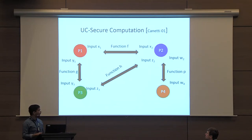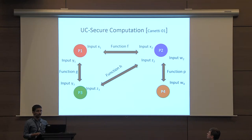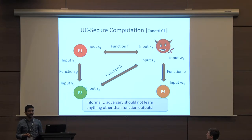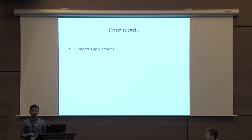Generalizing this, Canetti introduced the framework of UC Secure Computation, which we heard about in the previous talk. UC Security says that if there are several parties in the network interacting in several protocols, perhaps computing different functions, and some adversary corrupts one party P2, the security requirement is that this adversary should not learn anything about any other party's input, apart from whatever it could have learned just from the function outputs. UC Security has numerous applications.